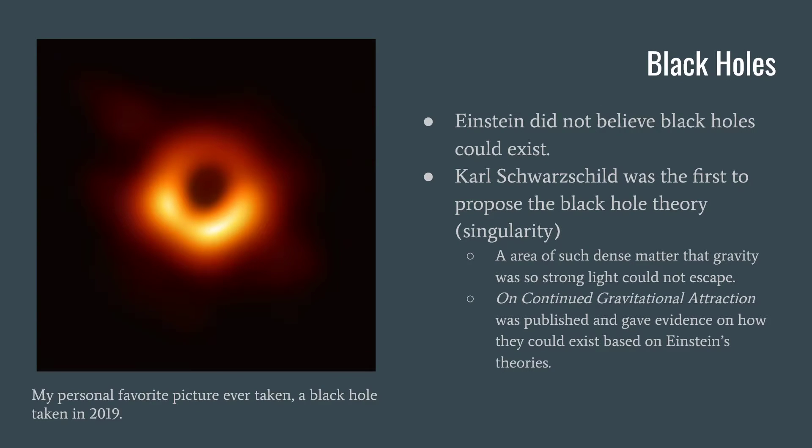So let's talk a little bit about black holes. Like I stated earlier, Einstein did not believe black holes could exist. While he had all of these amazing theories on gravity and how light traveled, he just could not believe that a singular point in our universe could be so dense and have so much gravitational pull that nothing could escape it. Not even light. He just did not believe it. And then Carl Schwarzschild, he was the first to propose the black hole theory or singularity as he puts it.